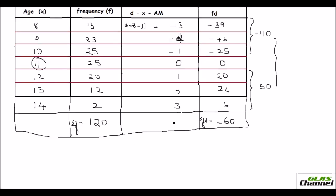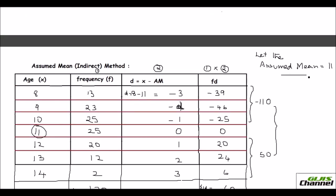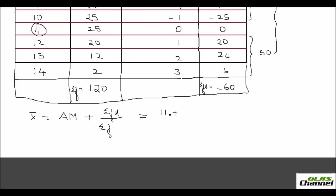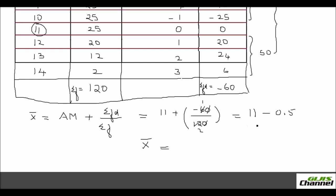Now calculate the mean using the assumed mean formula: AM plus sigma fd over sigma f. The assumed mean is 11, sigma fd is negative 60, and sigma f is 120. So: 11 plus (negative 60 over 120). Since 60 over 120 simplifies to 0.5, the mean is 11 minus 0.5, which equals 10.5.